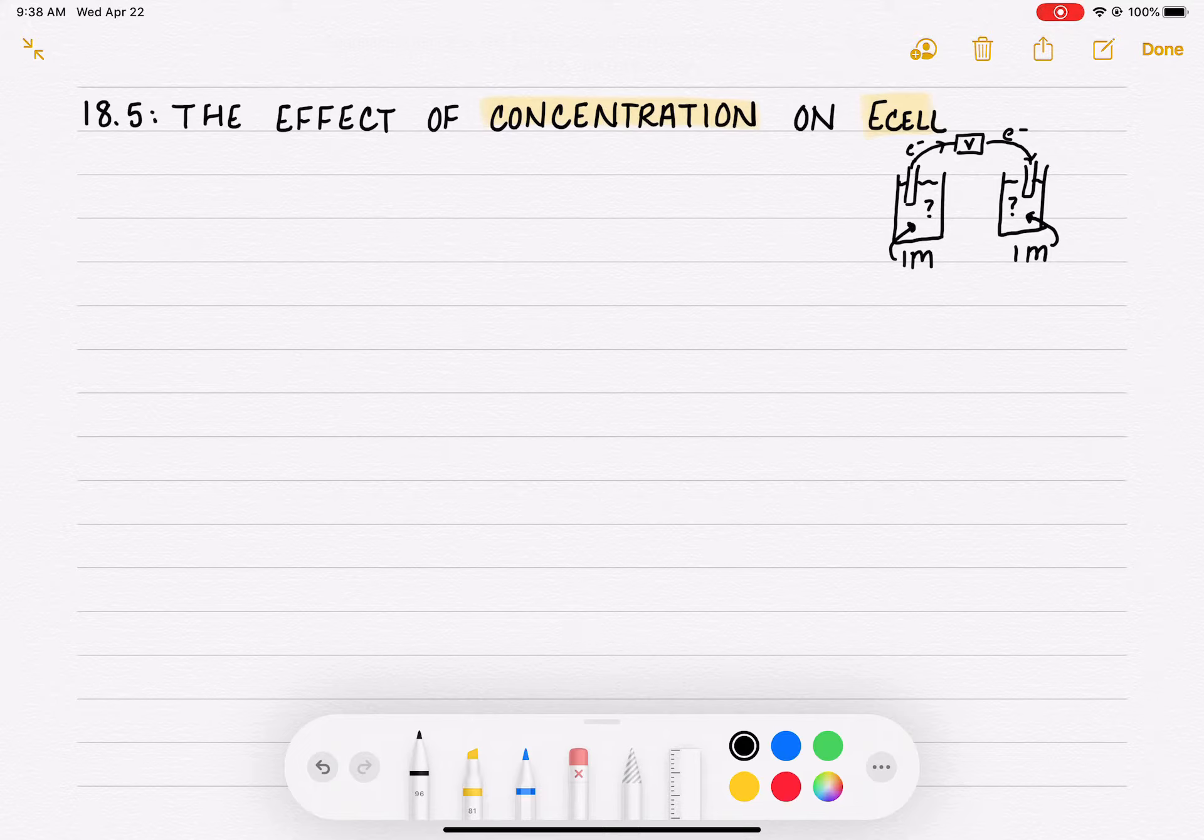If we are wanting to really fine-tune the voltage of a galvanic cell to not be restricted by just the difference between the two when running them under standard conditions at one molar, we could change the concentrations of these solutions. We could make them higher or lower than one molar, and this is going to have an effect on the voltage of the cell. That's what we're going to be talking about in 18.5.